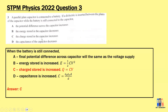Option C — charge stored in the capacitor increases: Yes, because we have higher capacitance. With constant V, we have more charge stored. And lastly, capacitance decreases: wrong, it should be increased as well. So the answer is C.